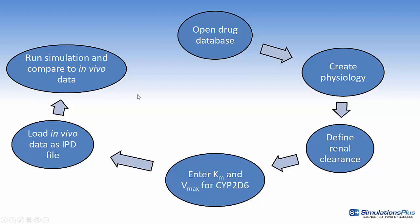This next slide is an overview of the process. First, I'm going to open a drug database from the tutorial folder of the GastroPlus directory. We're going to create the physiology, define the renal clearance of both the parent and the metabolites, and then enter the KM and VMAX for 2D6 for transforming Metoprolol into the metabolites.